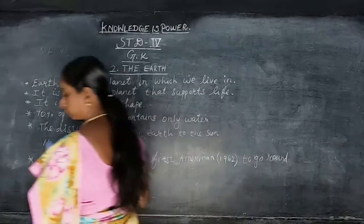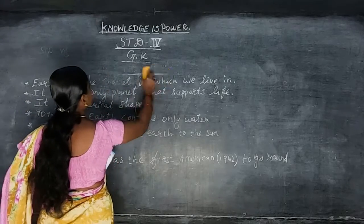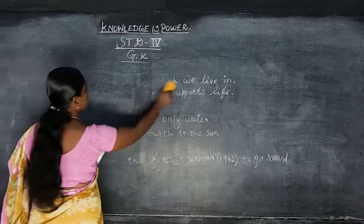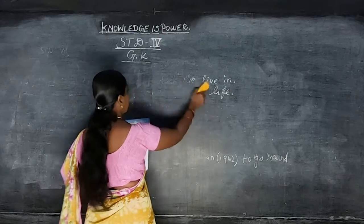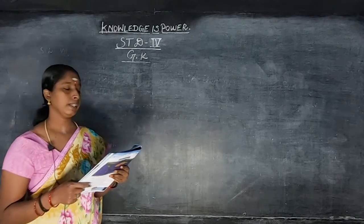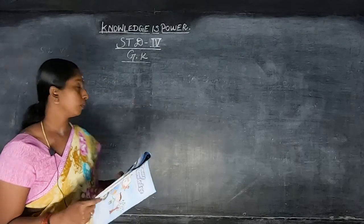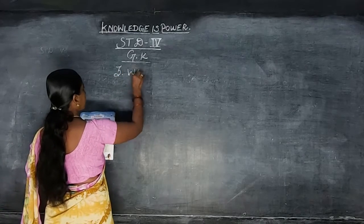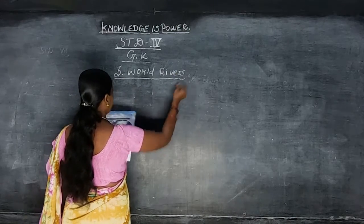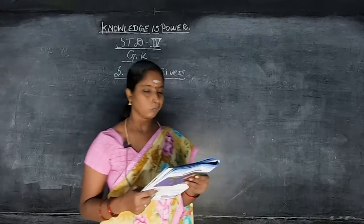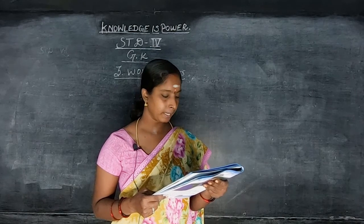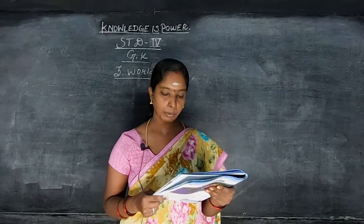Next: World Rivers. Third lesson — World Rivers. R-I-V-E-R-S. The most important rivers in the world. Rivers have been very useful to man. They provide a source of drinking water, for obtaining food and for transport. A list of the most important rivers in the world.